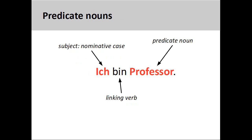Predicate nouns are also in the nominative case. Like predicate adjectives, predicate nouns are simply nouns that appear after a linking verb in a sentence and provide more information about the subject. In the sentence you see on the screen, 'ich bin Professor' — I am a Professor — the first-person singular personal pronoun 'ich' is the subject of the sentence. It is, therefore, in the nominative case. The masculine noun 'Professor' is also in the nominative case as it appears after the linking verb 'bin'.